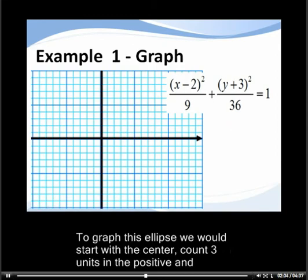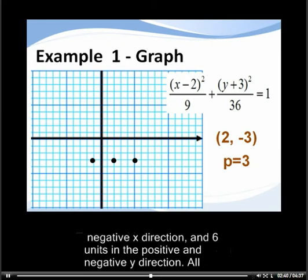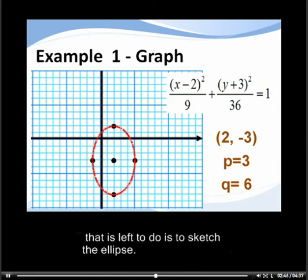To graph this ellipse, we would start with the center, count 3 units in both the positive and negative x direction and 6 units in the positive and negative y direction. All that is left to do is sketch the ellipse.